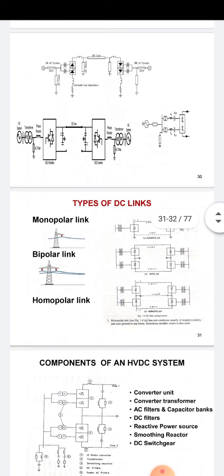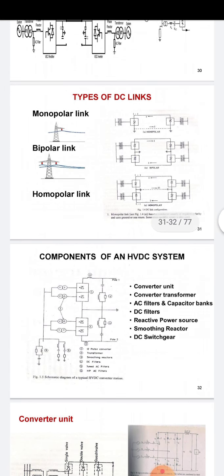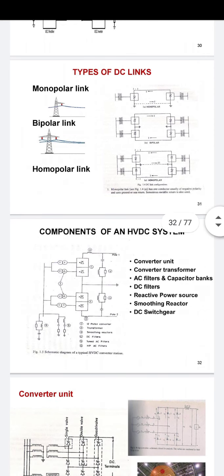Types of DC links: a monopolar link has only one conductor, usually of negative polarity, using ground or sometimes metallic return. A bipolar link has two conductors — one positive and one negative — with each terminal having two sets of converters of identical rating connected in series on the DC side. A homopolar link has two or more conductors all of the same polarity, always operated with ground or metallic return.